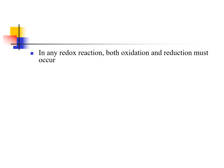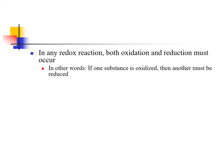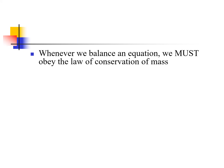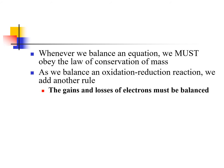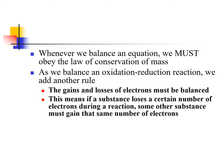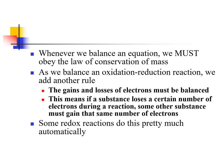In any redox reaction, we must have both oxidation and reduction, because the electrons have to go from something to something. If something is oxidized, something else has to be reduced. When we balance an equation we obey the law of conservation of mass, but now we also have to consider the number of electrons. Gains and losses of electrons must be balanced — if a substance loses a certain number of electrons, the other must gain that exact same number.